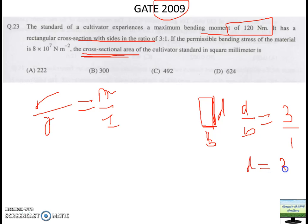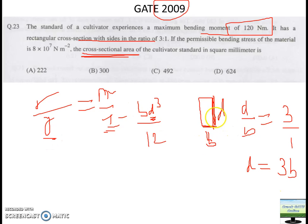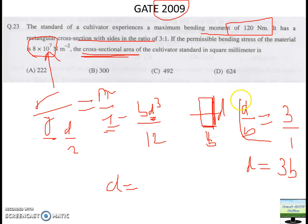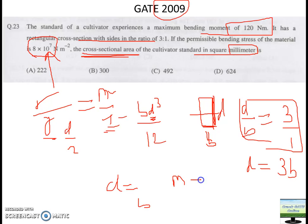So directly you can take D equal to 3 times B. The value of I is BD³ divided by 12, and now you can replace D with the value in terms of B. The value of Y is D divided by 2. The value of sigma has been given as 8 times 10 to the power 7 Newton per meter square. You need to calculate either D or B, and using the D-equals-3B relation, calculate B. Note that the answer will be in meters, so you need to convert it to mm, and then multiply B times D for the cross-section area in mm square.